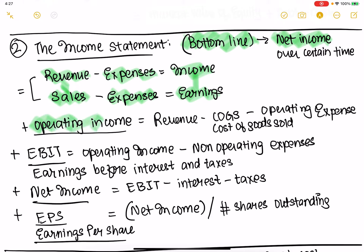From the income statement, you can capture operating income. Operating income is basically revenue minus cost of goods sold, minus operating expenses. This tells you how the company is doing just from its product — is your product profitable? Does it take you less money to produce than you can sell it for? So operating income is a good measure.